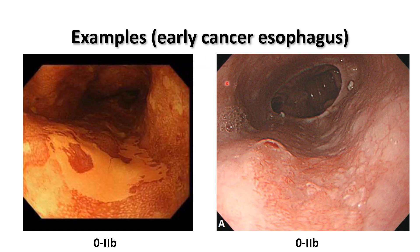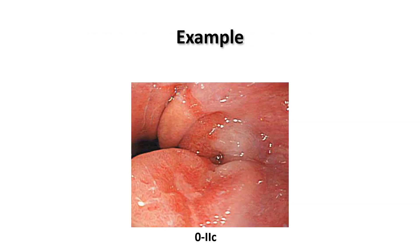Completely flat lesions are hardly seen in the colon; they are more common in the esophagus. For example, this lesion is not taking the pigmentation while the surface of the esophagus is taking the iodine staining. This is another type 2B completely flat lesion. This is an example of a slightly depressed lesion, type 2C, at the distal end of the esophagus.